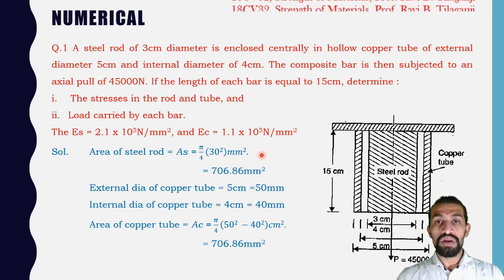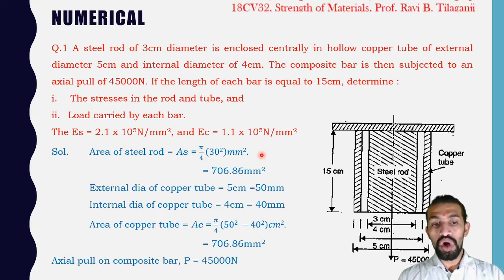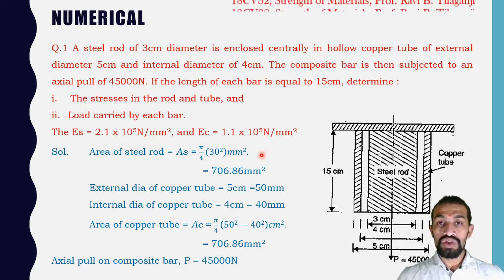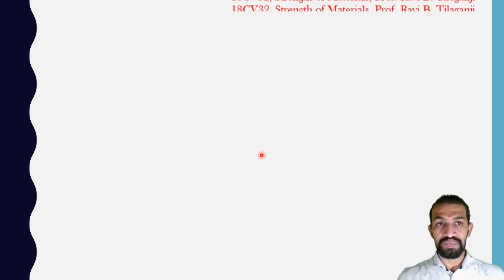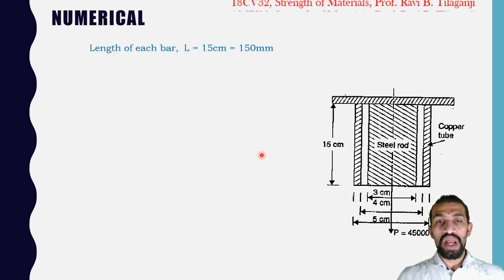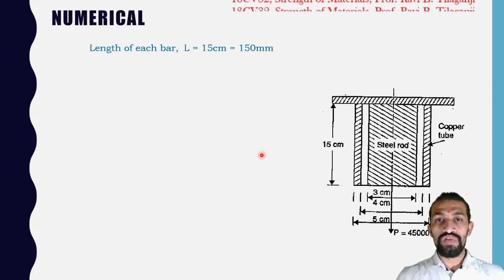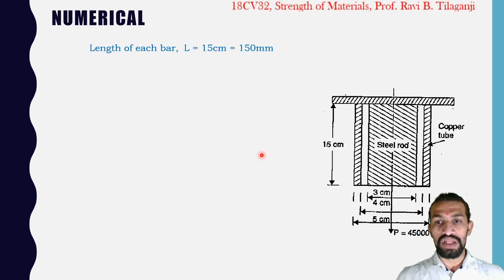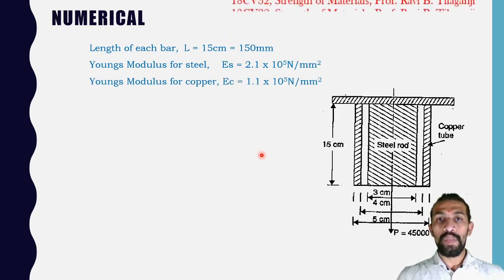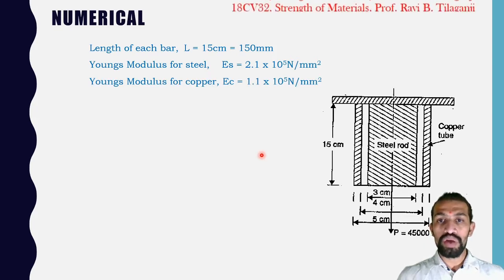The actual pull on the composite bar P = 45,000 Newton. The length of each bar L = 15 cm = 150 mm. Young's modulus of steel ES = 2.1 × 10⁵ N/mm², and for copper EC = 1.1 × 10⁵ N/mm².